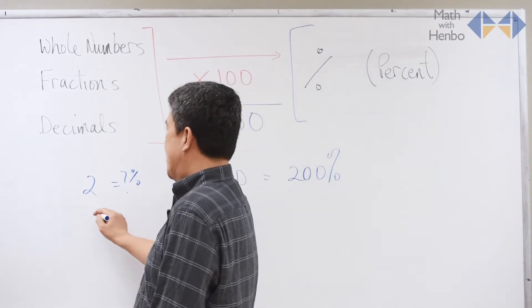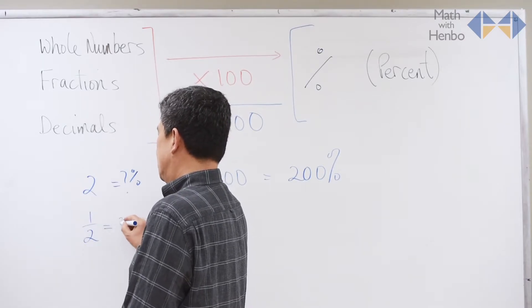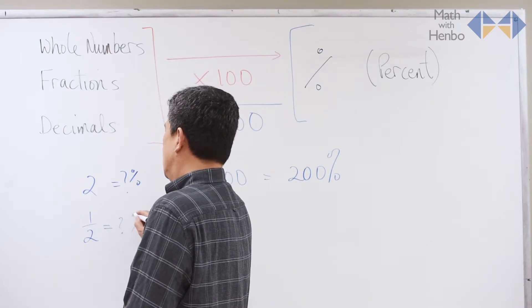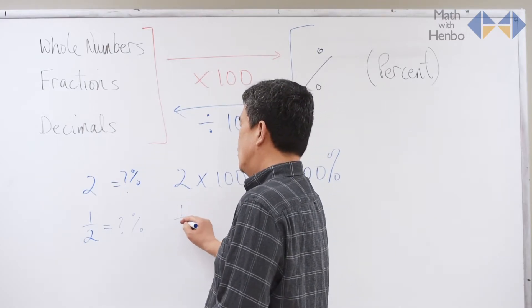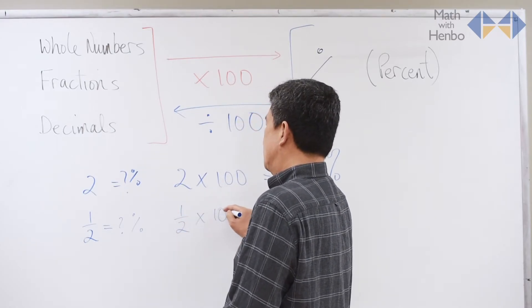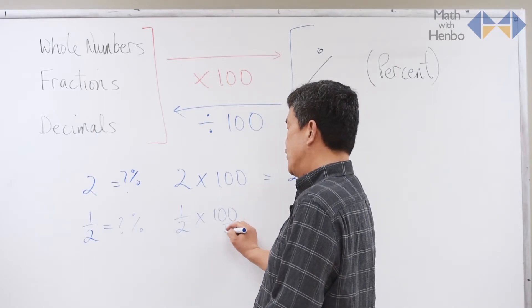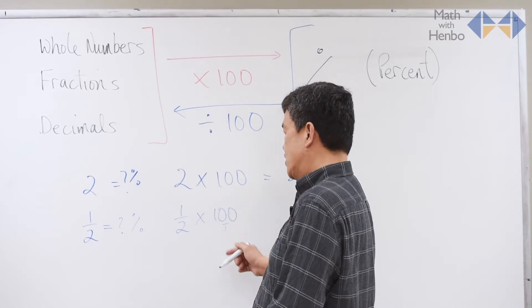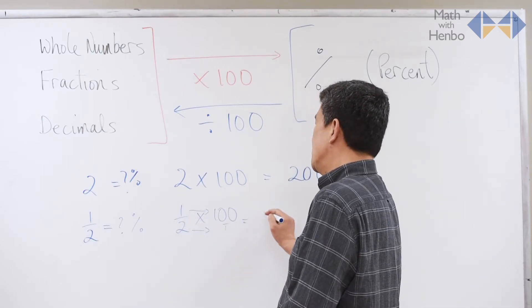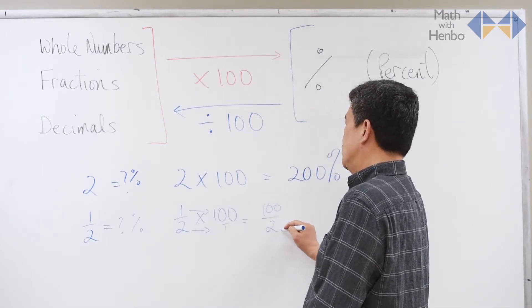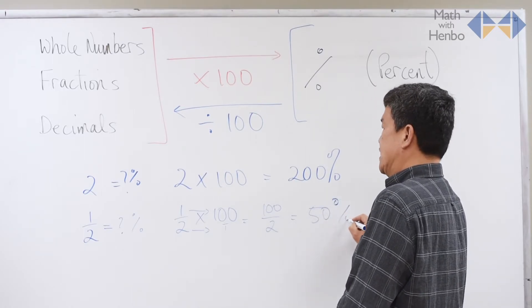But if I have a half, and I want to convert that into percent, just remember the fraction rule still applies. One half times one hundred — a whole number technically has a one underneath it, that's why it's one hundred. So top to top, bottom to bottom, gives me one hundred over two. And when you divide that, you get fifty percent.